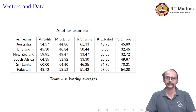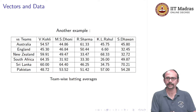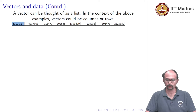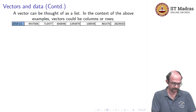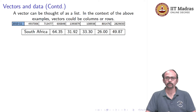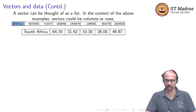These are two examples of data arranged in a table, which is typically how we get data. Often the things we are interested in are about a row or a column. This is exactly where the idea of a vector stems from. A vector can be thought of as a list. In the context of the above examples, vectors could be columns or they could be rows. Here is an example from the GDP table: a row corresponding to 2010-11, showing the total GDP and sector-wise GDP in crores. Or here is an example from the cricket table: the batting averages of Kohli, Dhoni, Rohit Sharma, etc., with respect to South Africa.